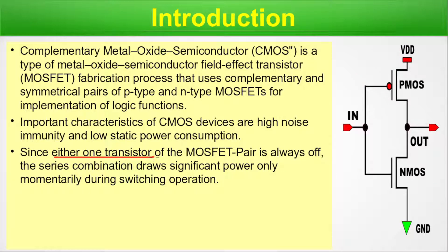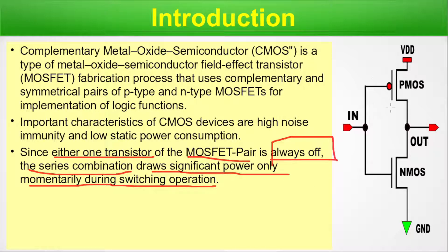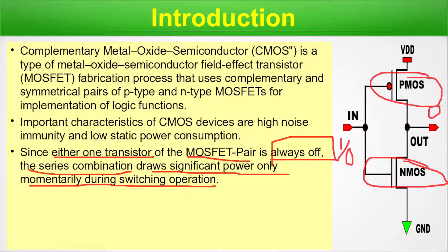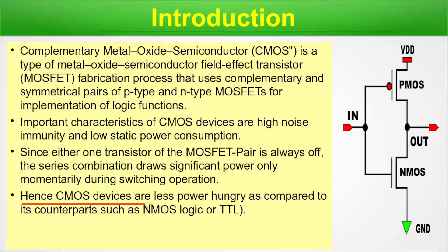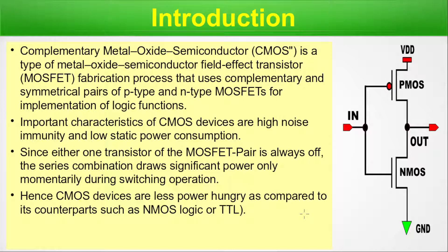Since either one transistor of the MOSFET pair is always off, the series combination draws significant power only momentarily during the switching operation. Either this PMOS or NMOS will be on at a time — when we give a 1 or 0 at input we get 0 or 1 at output. There is no situation where both are on simultaneously, so the power consumption is very low. Hence CMOS devices are less power hungry compared to NMOS logic or TTL.